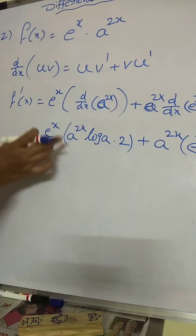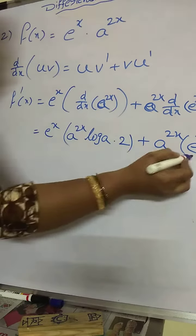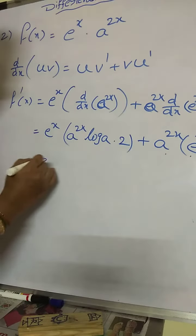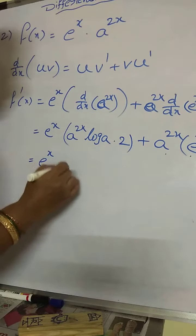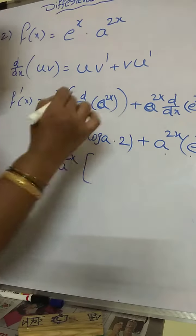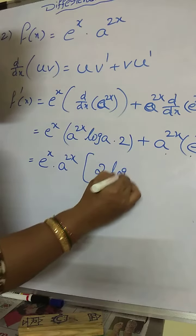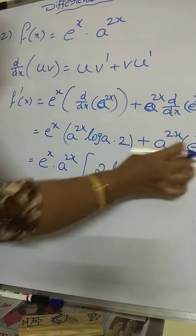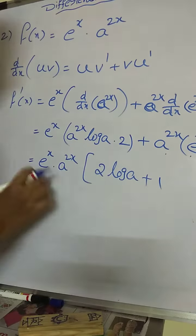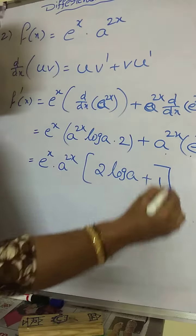Now see both functions are common here. Common term what is that? e power x a power 2x. Then you common them here e power x into a power 2x. Here remaining part is 2 into log a plus here only 1 is there. Then 1 into this what I told you.